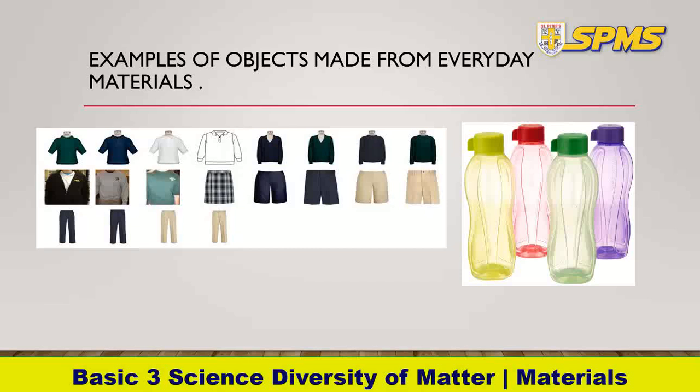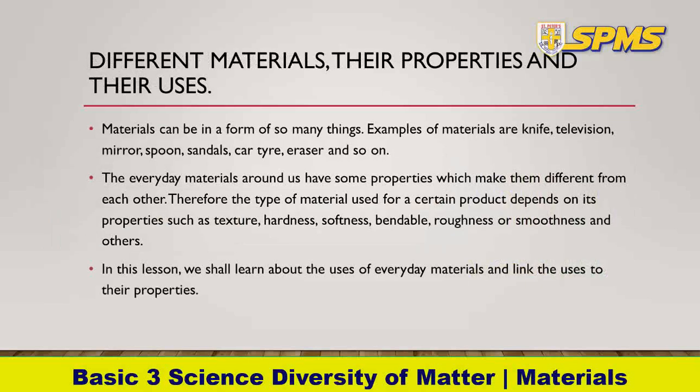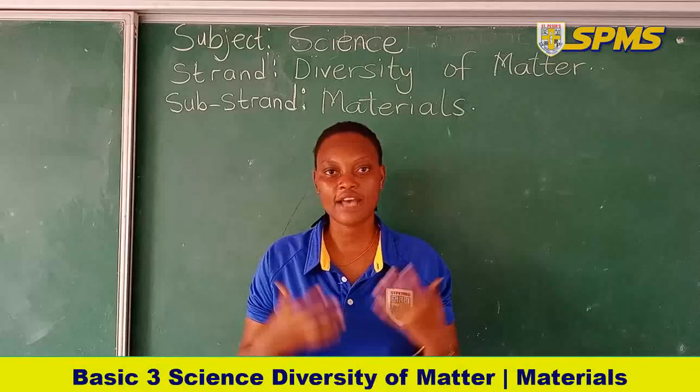These things are made from materials. We have the water bottle, clothes, baskets, books, a football, and a wooden chair. These are objects or things that we get from materials. Let us look at the different materials, their properties, and their uses.